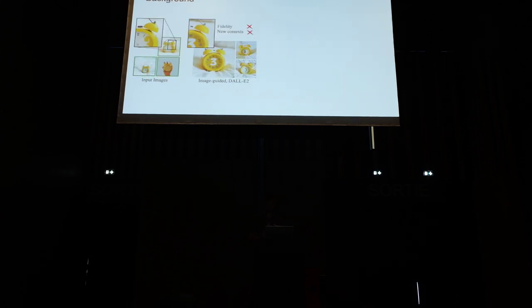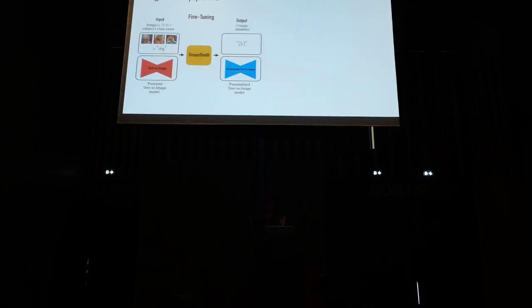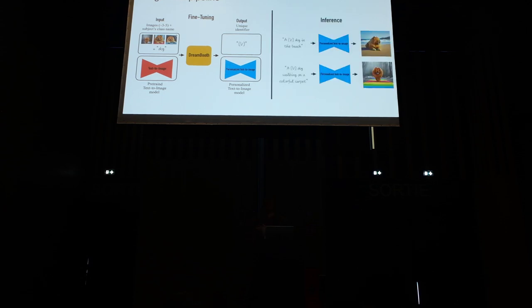The concept behind DreamBooth is that with models guided by text, you cannot reproduce an exact object just by providing an image as input — you just get image guidance, not the actual identity. DreamBooth enables that by simply fine-tuning the model. We take a few images of an object and fine-tune the model such that a new identifier — in this case V* — from now on represents our dog. In inference, after fine-tuning, we can refer to our dog with this unique identifier V*. So we can say 'a V* dog at the beach' and we get our dog at the beach. Two objectives: generate my dog when I say V* dog, and generate other dogs when I say 'a dog,' to prevent the model from forgetting the general concept.